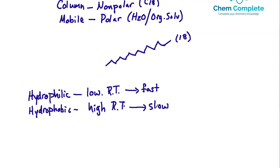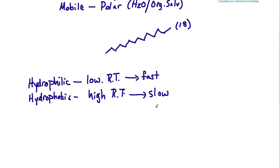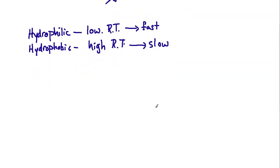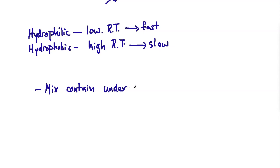That covers how the column holds on to hydrophilic versus hydrophobic materials and how long they stay until washed off to the detector. Knowing those general separation patterns, what types of mixtures is reverse phase going to be suitable for? Considering that we can have both hydrophobic and hydrophilic compounds, that seems like a large mix. There are some limitations, but reverse phase is pretty versatile — it tends to be used whenever we have mixtures containing materials that are under 2,000 Daltons.